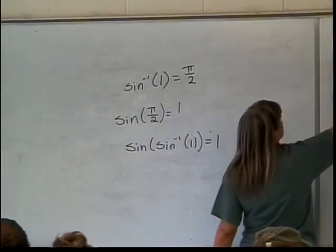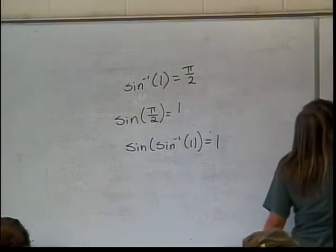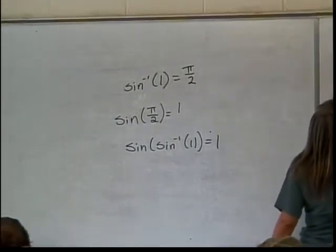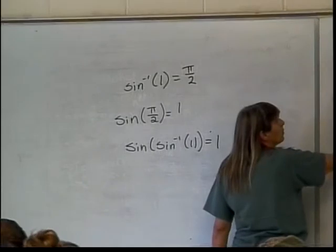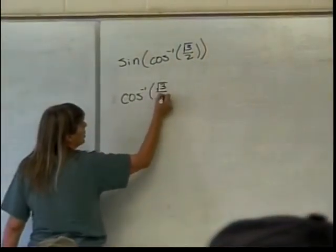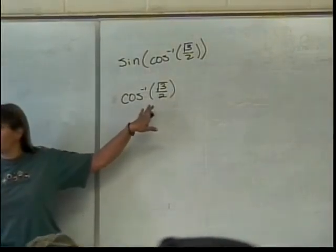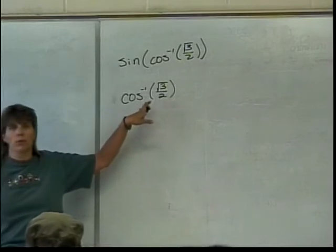So let's do the part in the middle first. All together I'm trying to do sine of cosine inverse of the square root of 3 over 2. So let's start in the middle. What's the cosine inverse of the square root of 3 over 2? In other words, what angle between 0 and pi has a cosine value of the square root of 3 over 2?